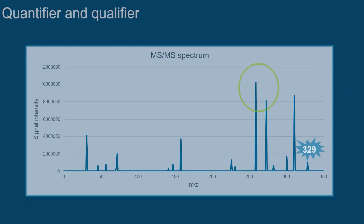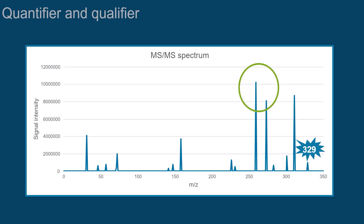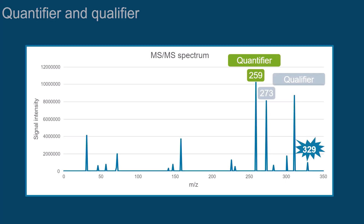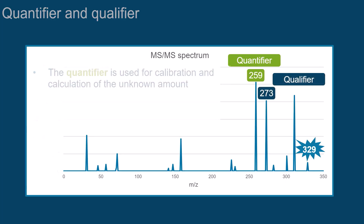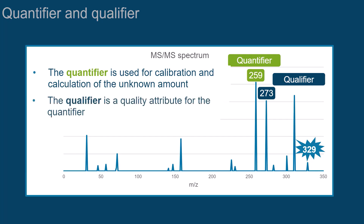It is common practice that we choose two ions to serve as a so-called quantifier and qualifier. Based on the quantifier, you will build your calibration curve and calculate the unknown amounts of your target compound. The qualifier serves as a quality attribute for the quantifier.